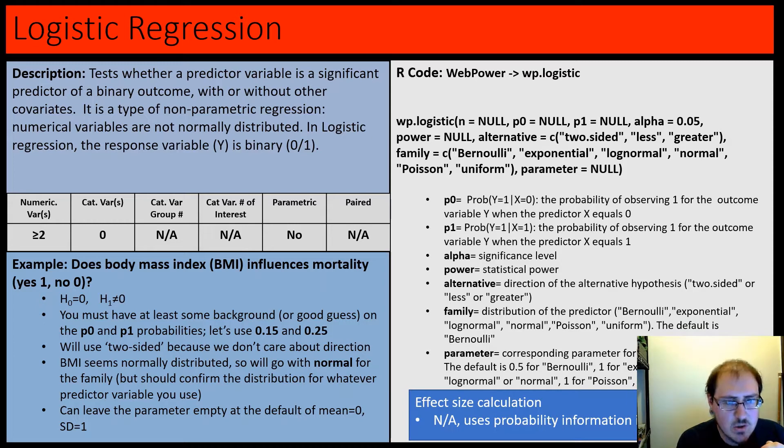We've made it to logistic regression. We've looked at single and multiple regression before, but now we're going nonparametric. Logistic regression is where the predictor variable is a significant predictor of a binary outcome, so our response variable or y variable is going to be binary - zero or one. This is definitely not a normal distribution. For example, does body mass index (our predictor variable or x variable) influence mortality, which is binary - yes or no?